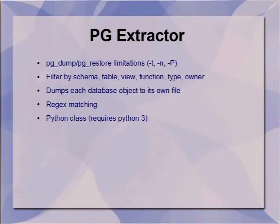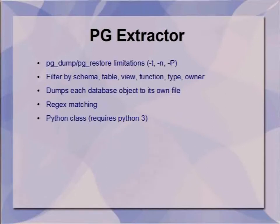This is the first project I worked on, called PG Extractor. PG Dump is pretty limited in what you can actually filter out when trying to get objects out of the database. The basic filters you have are table and schema, and the -P flag for functions only works on PG Restore — it does not actually work on PG Dump. It only dumps out the access control list and privileges for tables, so it's quite limiting if you just want to get a function out or a specific piece of code.